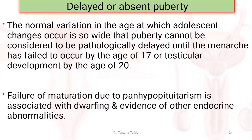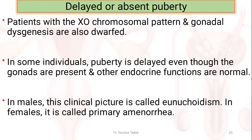Delayed or absent puberty: the normal variation in the age at which maturational changes occur is so wide that puberty cannot be considered pathologically delayed until menarche has failed to occur by age 17, or testicular development by age 20. Failure of maturation due to panhypopituitarism is associated with dwarfism and evidence of other endocrine abnormalities. Patients with an X0 chromosomal pattern and gonadal dysgenesis are also affected. In some individuals, puberty is delayed even though the gonads are present and other endocrine functions are normal. In males, this clinical picture is called eunuchoidism; in females, it is called primary amenorrhea.